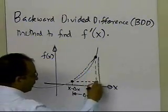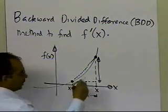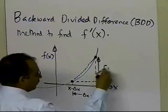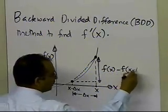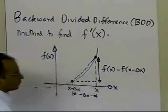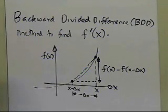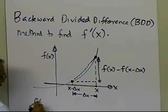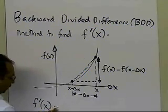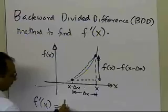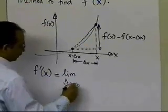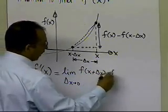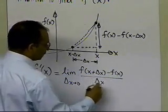If you look at this distance here, which is the rise, it is given by the value of the function here minus the value of the function here, which is f of x minus f of x minus delta x. Now, if you look at this run here, which is delta x, we go back to the definition from differential calculus: f prime of x is defined as the limit as delta x approaches 0 of f of x plus delta x minus f of x, divided by delta x.